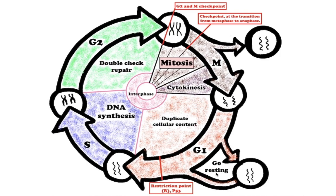In G0, a cell is performing its functions without actively preparing to divide. G0 is a permanent state for some cells, while others may restart division if they get the right signals.